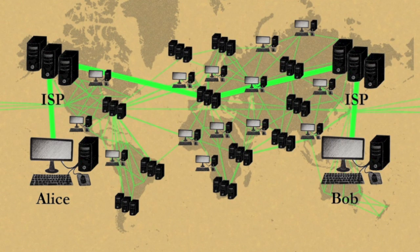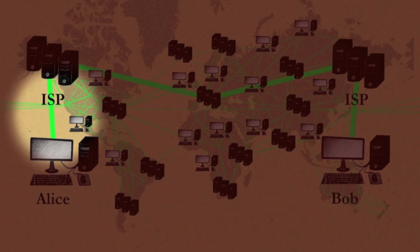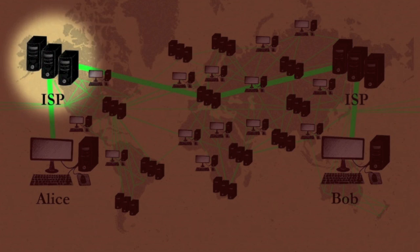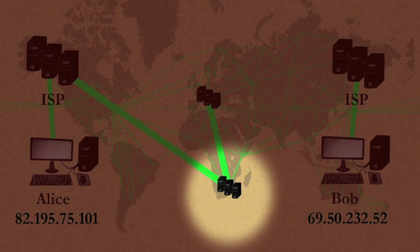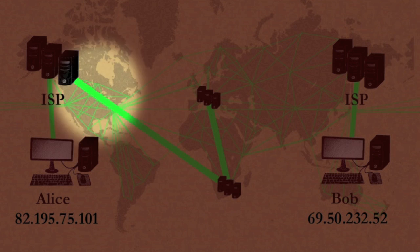Many approaches to surveillance and censorship have one thing in common: they replace your local, surveilled connection to the internet with one elsewhere. One-hop proxies and virtual private networks can be useful, but they still have a record of your activities. They can be hacked, bribed, or coerced to give up information on their users. They know where you're coming from and where you're going to on the internet.